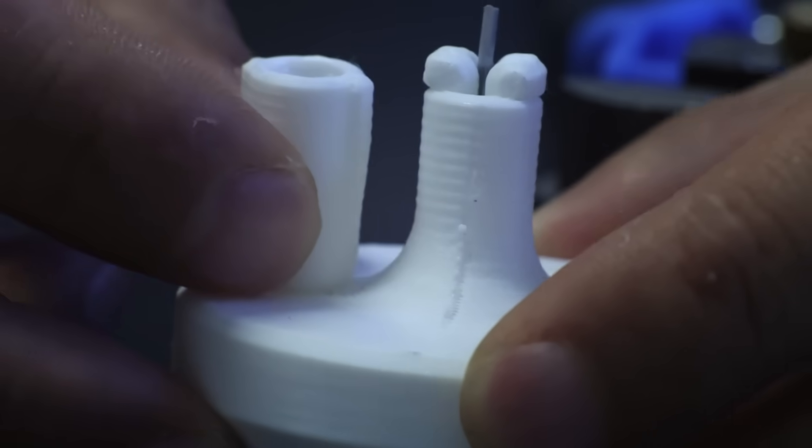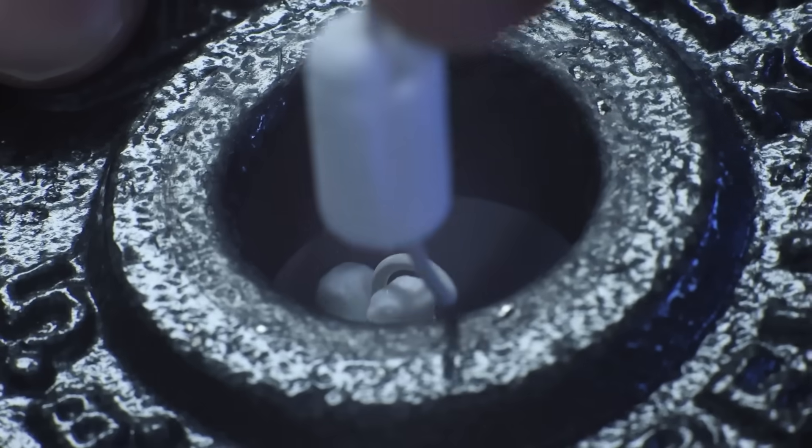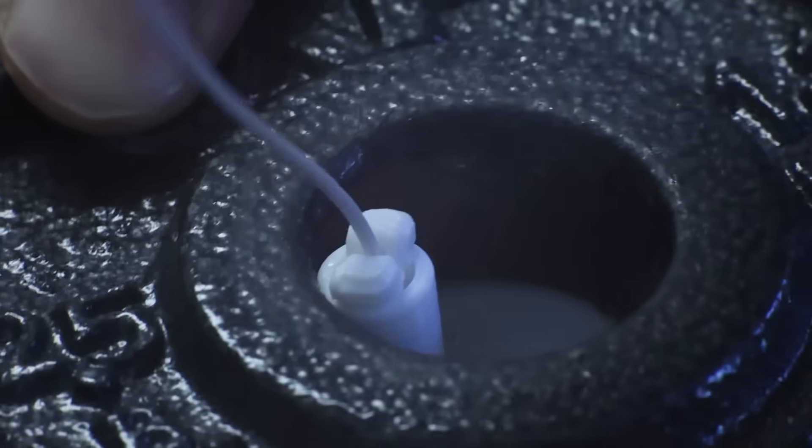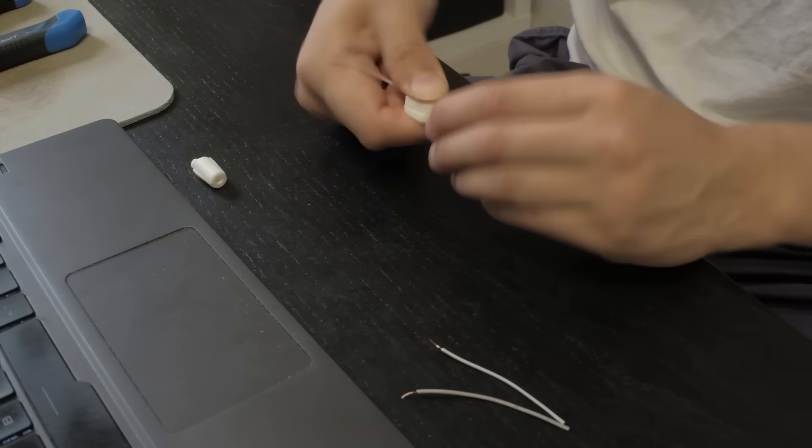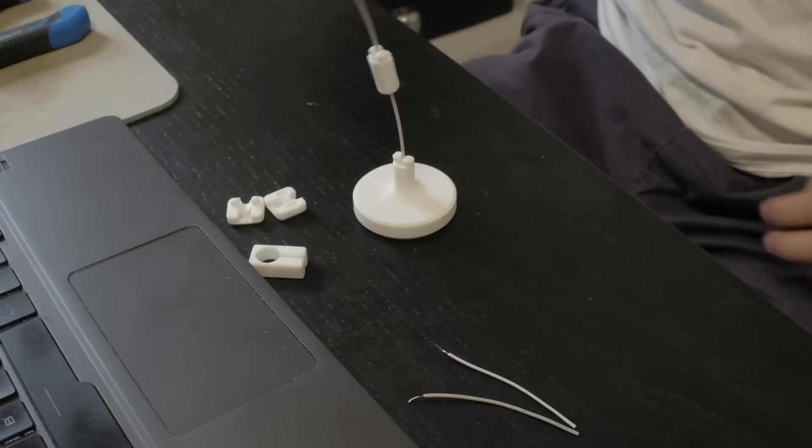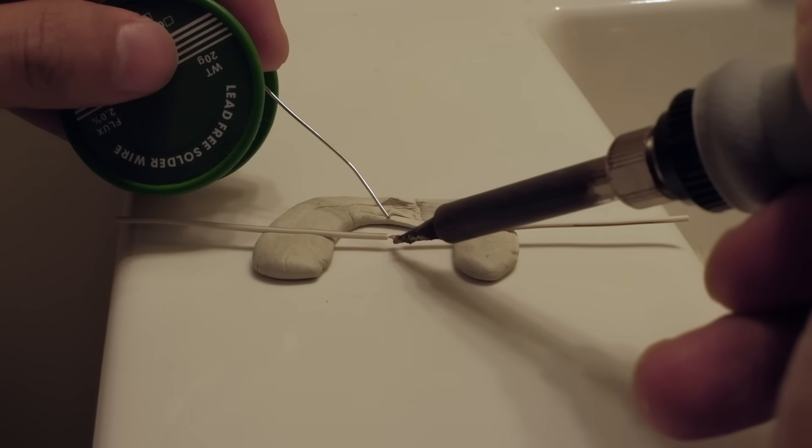To test the sturdy printed joint against an actual soldered connection, I first had to print out a custom fat housing piece just to hold on to some weights. I then made all the necessary connections, including the solder and even some heat shrink on there just for good measure.